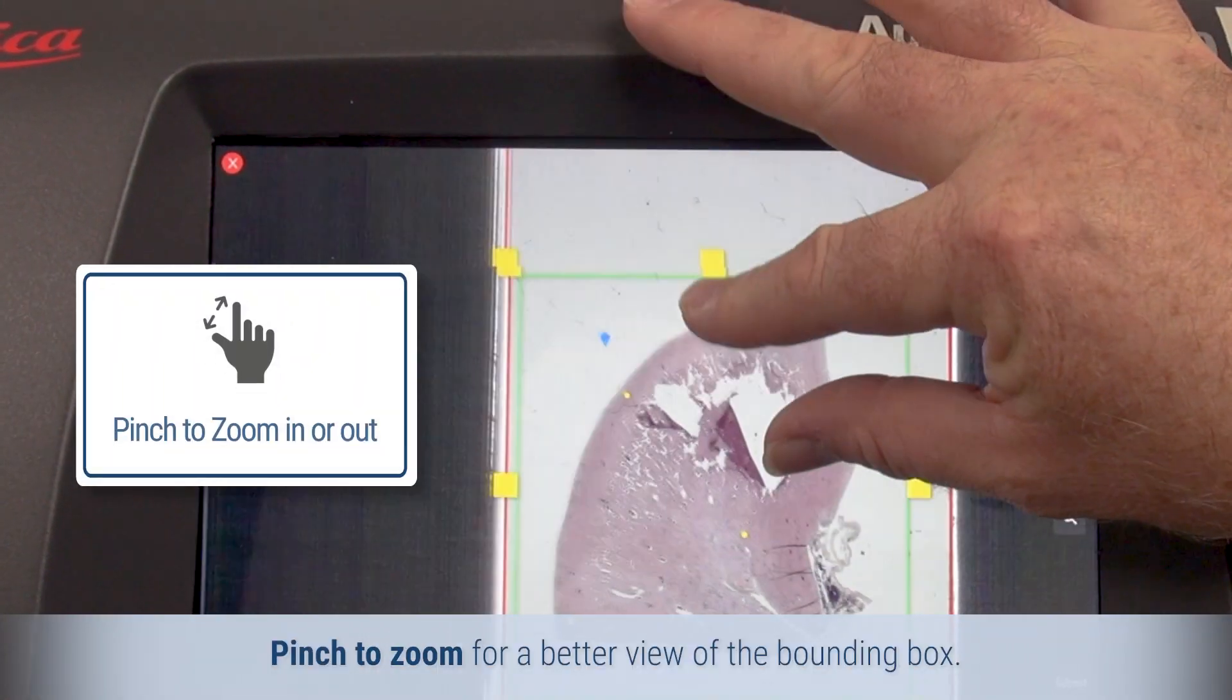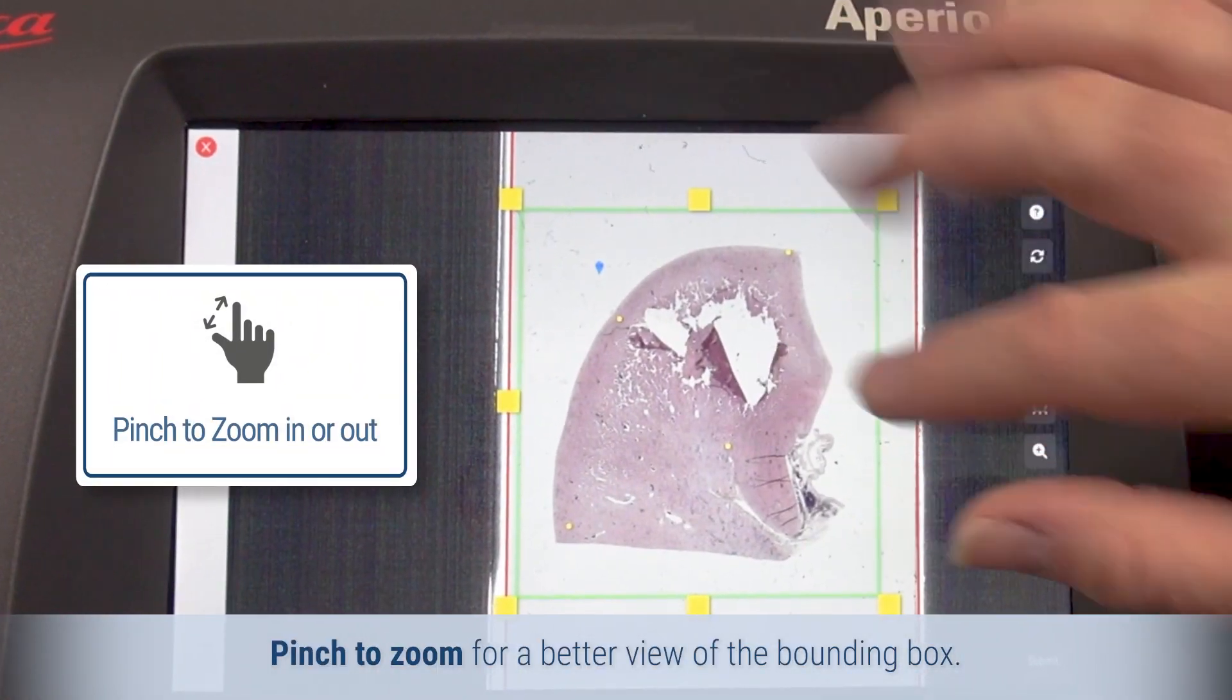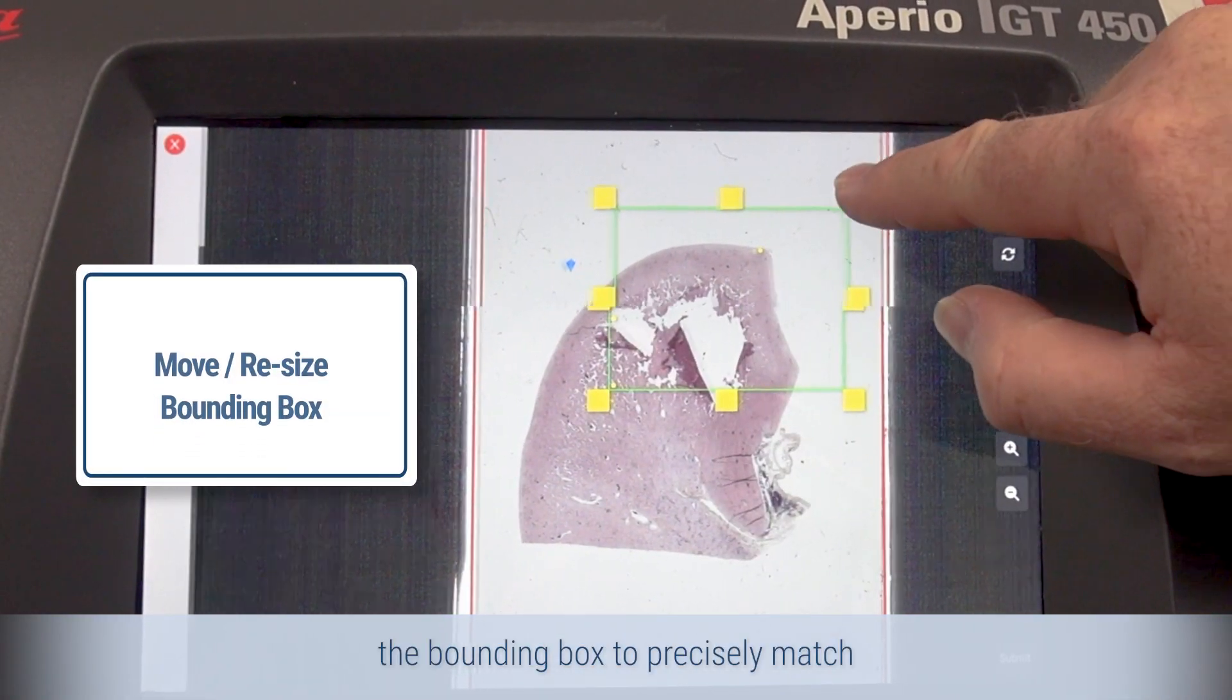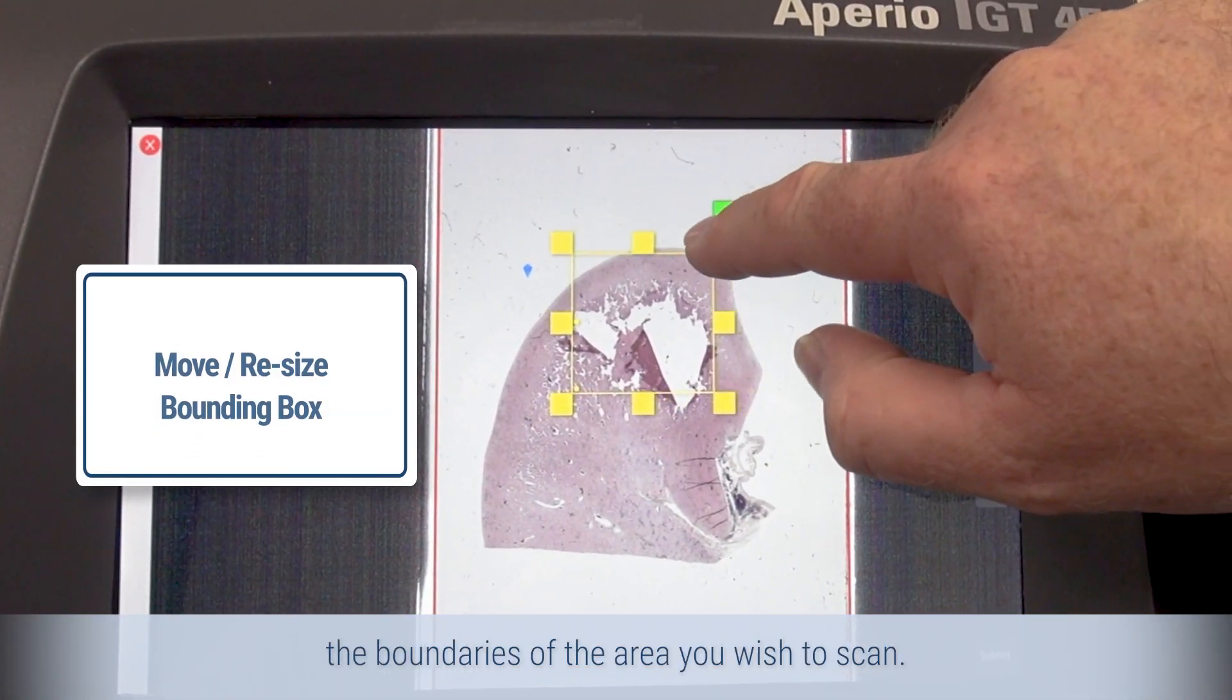Pinch to zoom for a better view of the bounding box. And drag to move or resize the bounding box to precisely match the boundaries of the area you wish to scan.